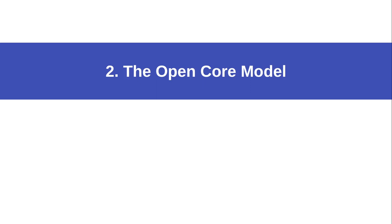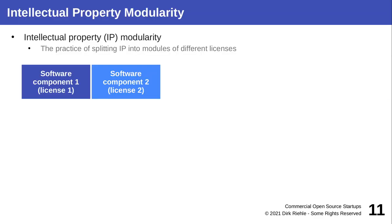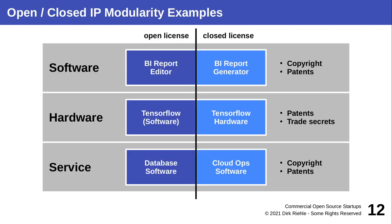The model I just described — feature differentiation via a closed complement — became known as the open core model, or more generally, IP modularity. You split your code into modules with different licenses: one module gets an open source license, the other only gets a proprietary license. This IP modularity applies to software, hardware, and services.